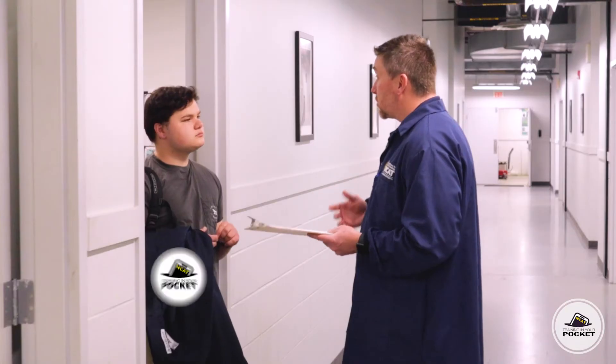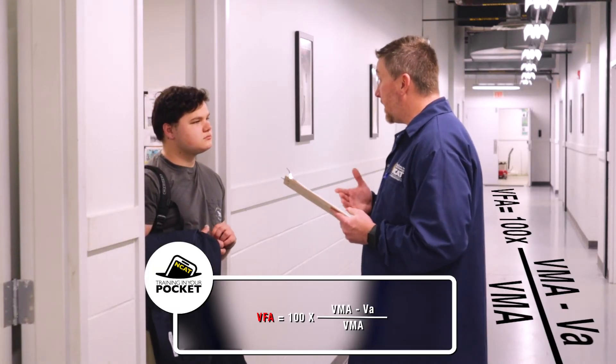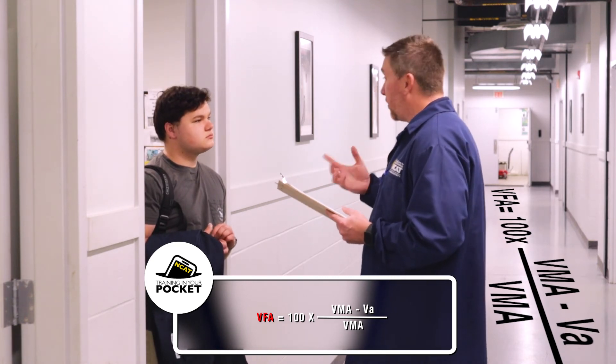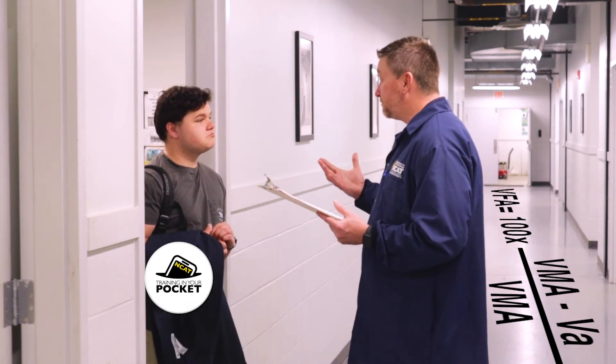Now let's move on to the VFA. VFA stands for voids filled with asphalt. Isn't that all the voids? No — remember we need the air voids, plus there are little spaces inside the aggregate itself that the binder can't even flow into. Again, this one is not a direct measurement — it's a calculation. We take the VMA, subtract off the air voids, divide that by the VMA, and multiply it all by 100.